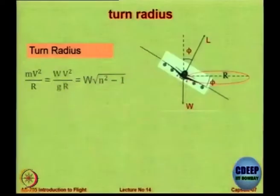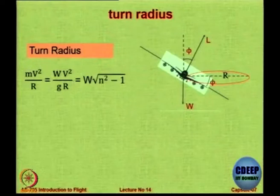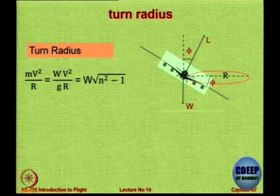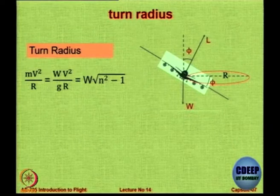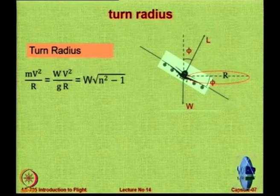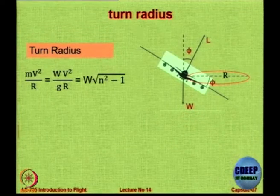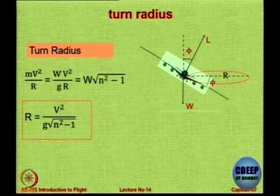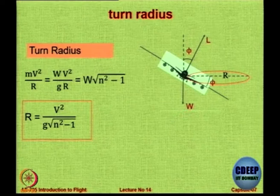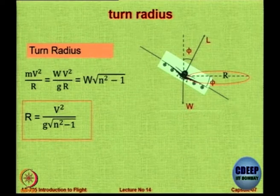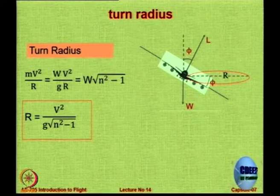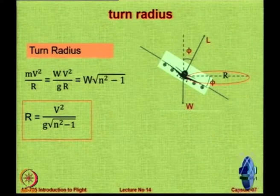Let us look at the turn radius now. The centripetal force is MV²/R; M can be replaced by W/G. In other words, the radius of turn is directly proportional to the square of the velocity and inversely proportional to the square root of (N² − 1), with G being a constant.